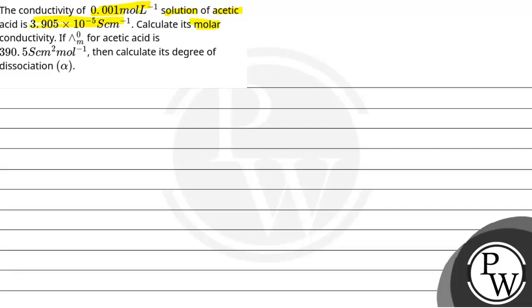Calculate its molar conductivity. If λ° for acetic acid is 390.5 S cm² mol⁻¹, then calculate its degree of dissociation.